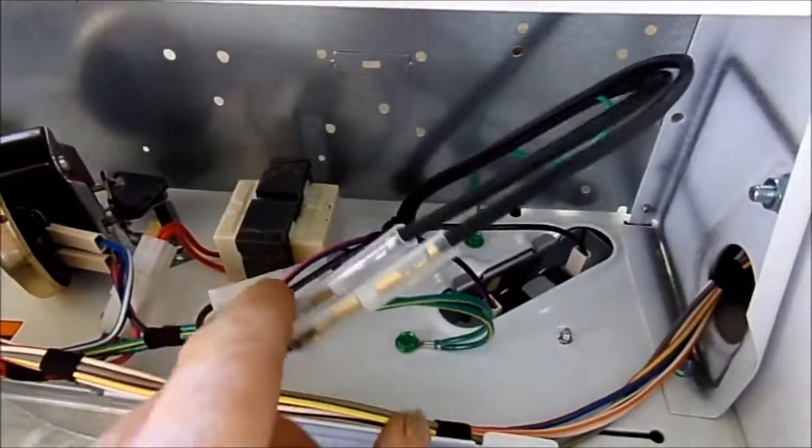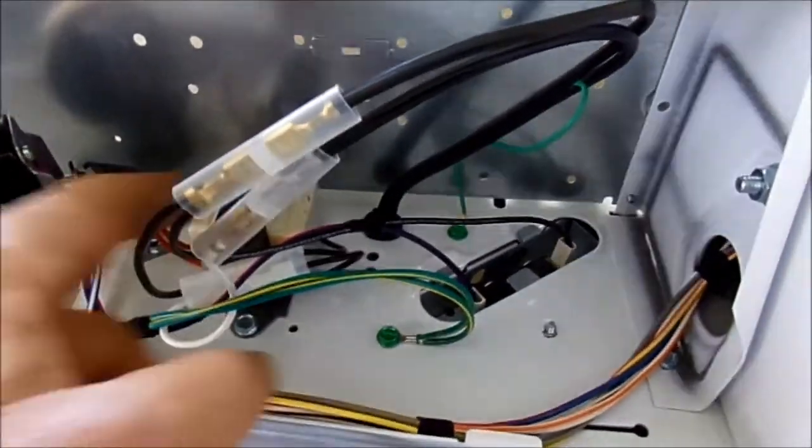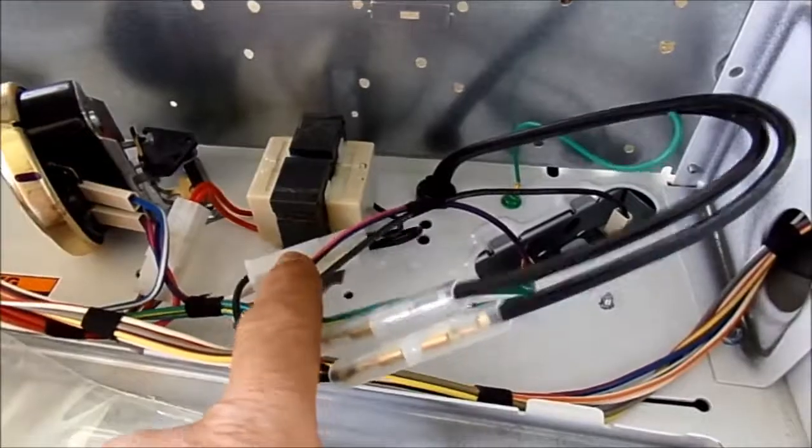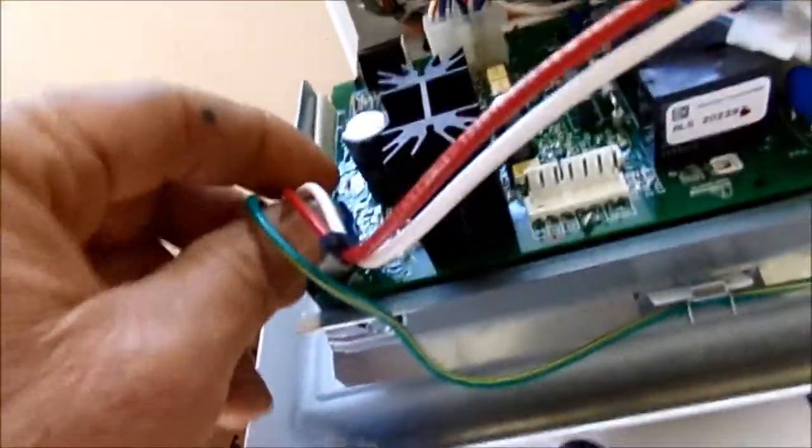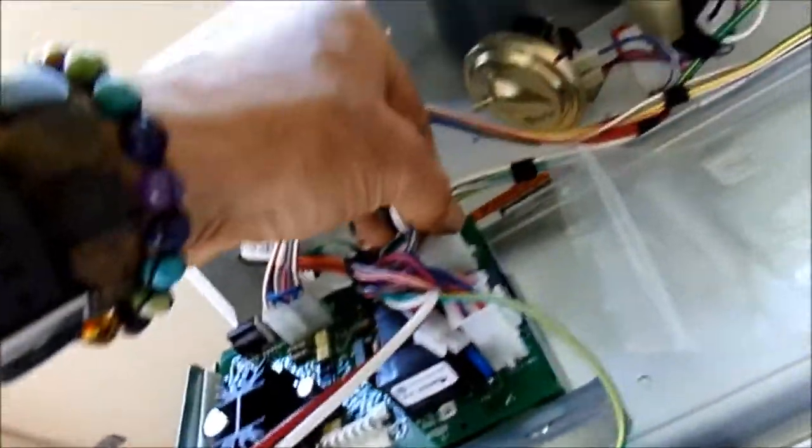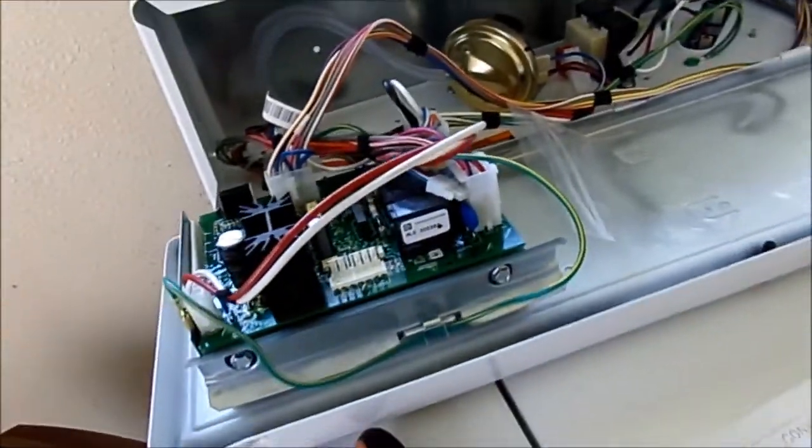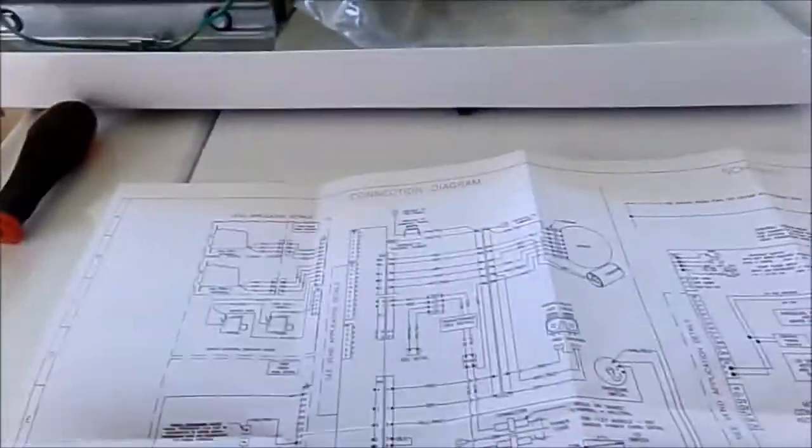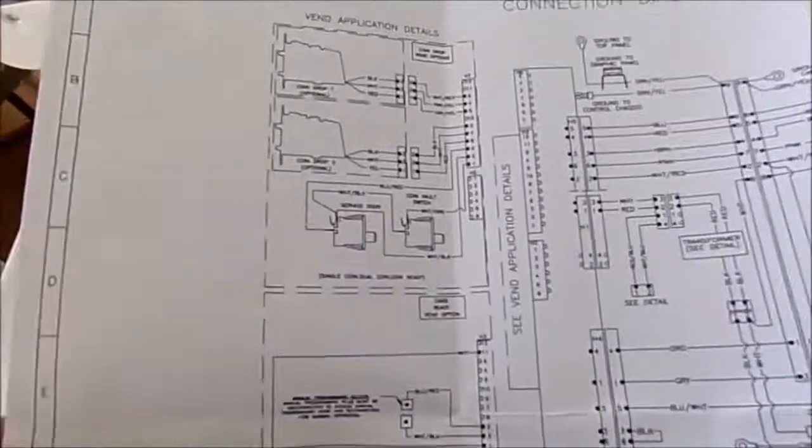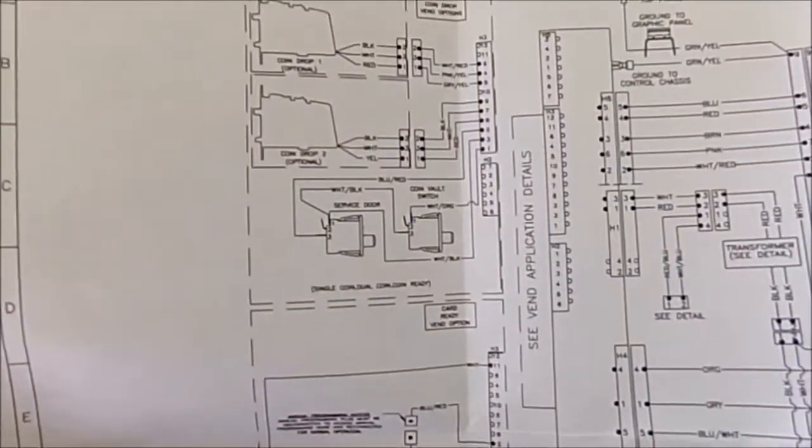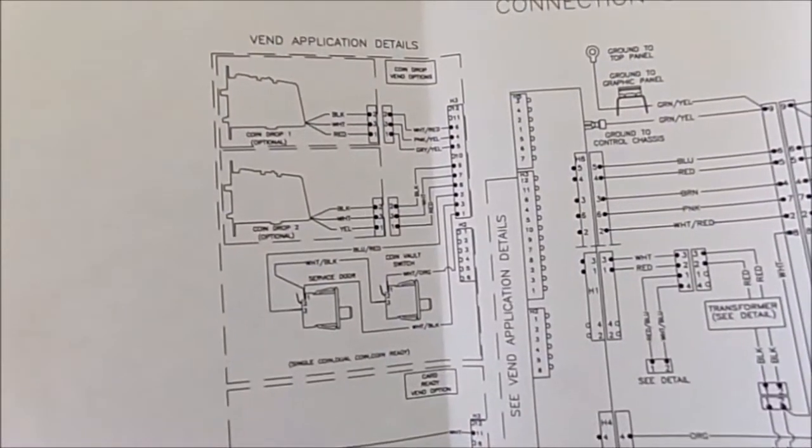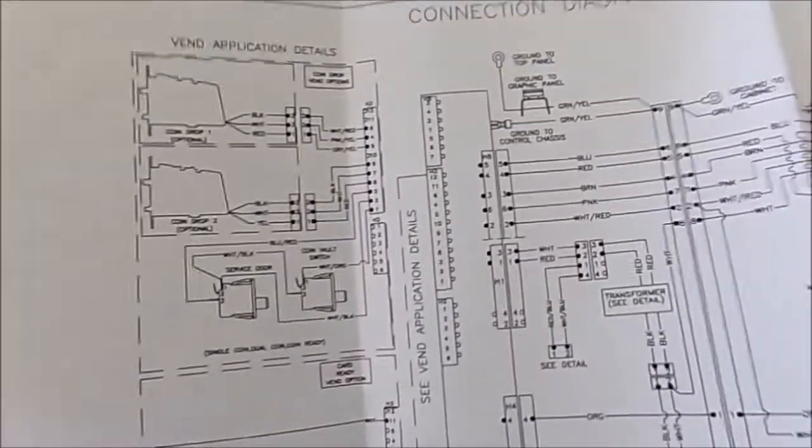To see if there's any loose connections back here. We probably definitely have voltage to the board because it all lights up. Don't see any loose connections here, so that's good. So we still have a problem. This is the wiring diagram, and at this point I'm not sure exactly where to go.